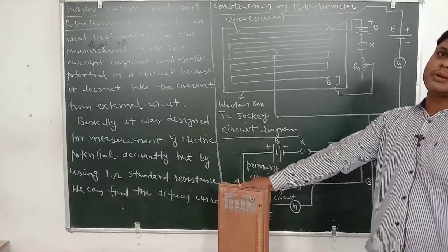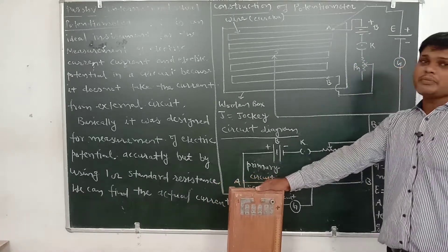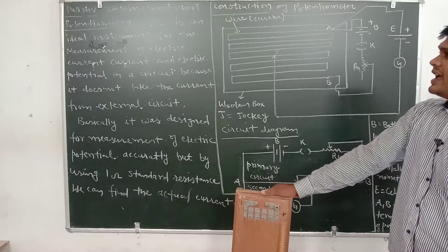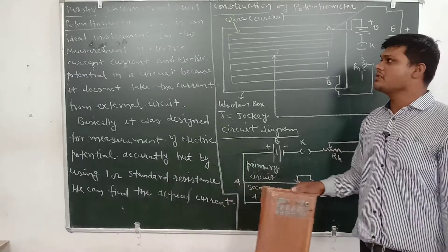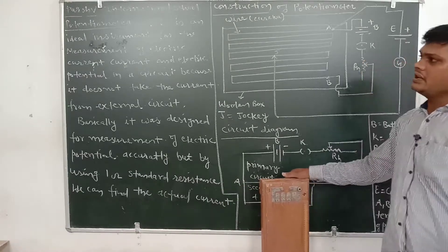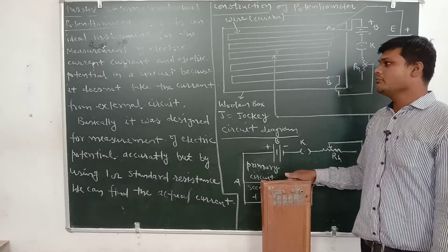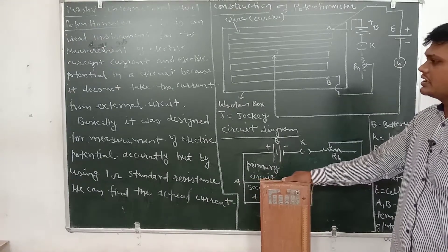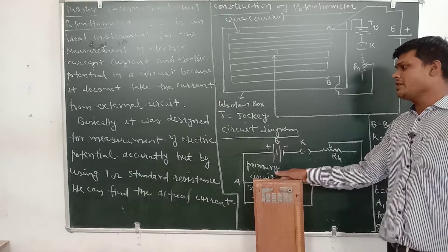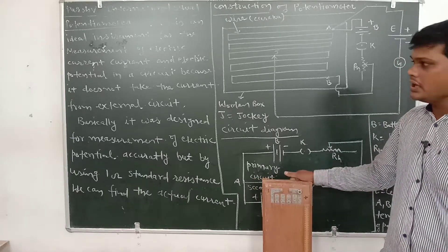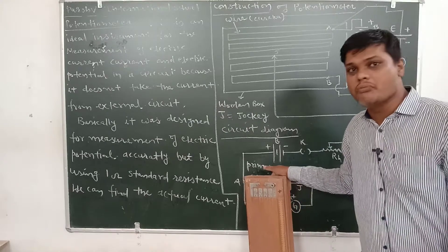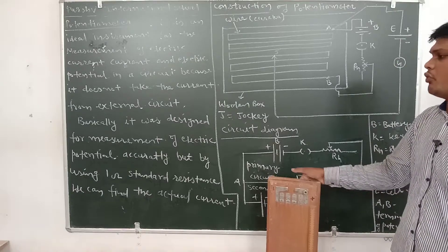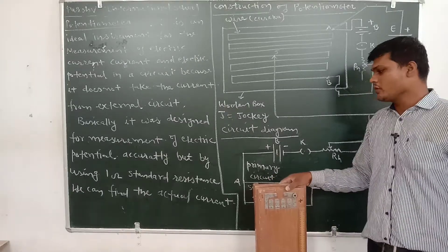How do we measure the potential through the potentiometer, and most importantly, why are we using the potentiometer? It is an ideal instrument for the measurement of electric current and electric potential in a circuit, because it does not take current from the external circuit. It was basically designed for measurement of electric potential. Using a one ohm standard resistance, we can find the actual current.